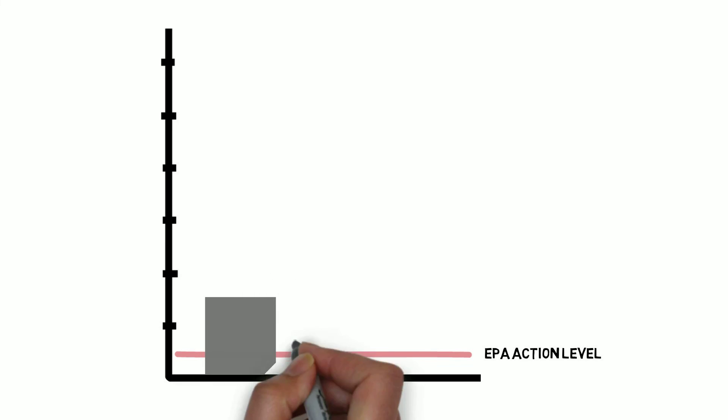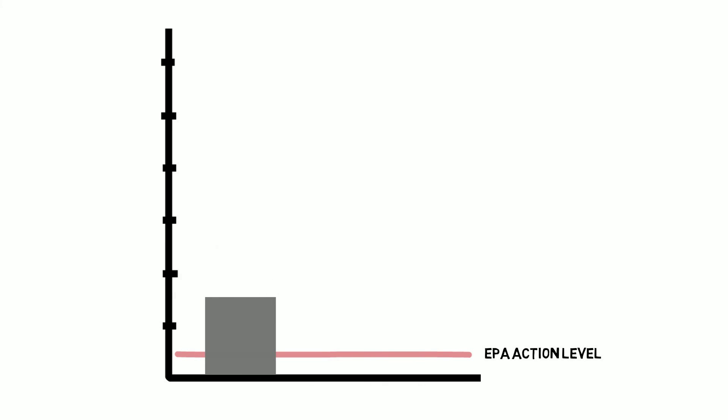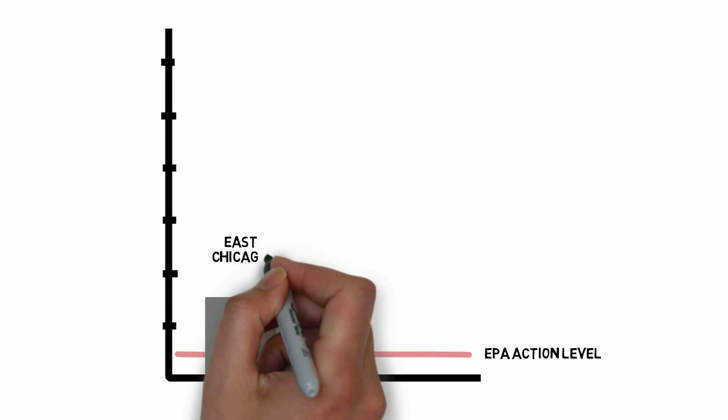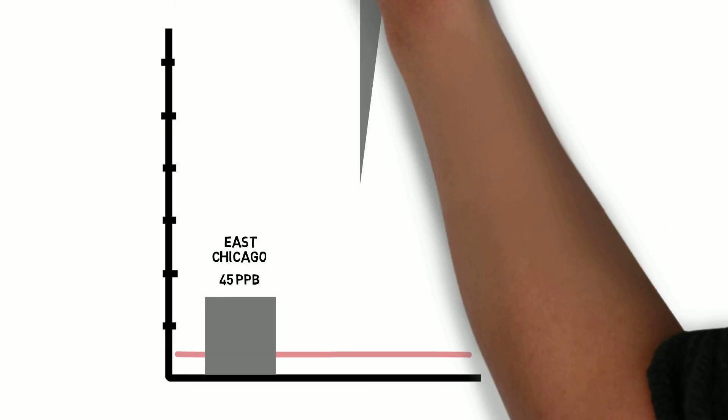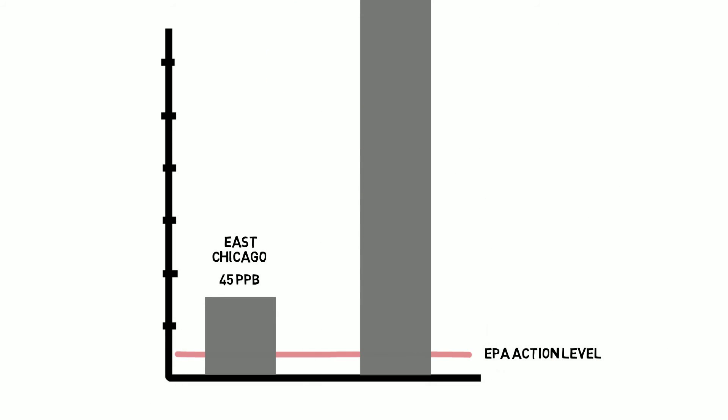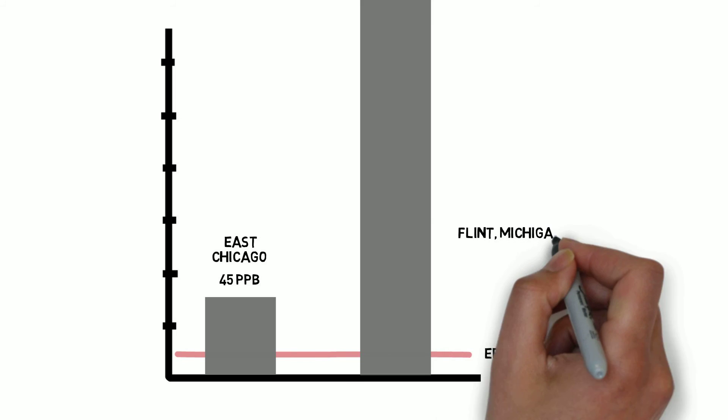To put that into context, in East Chicago, the highest measured level of lead in the water supply was 45 parts per billion. In Flint, Michigan, that level was 11,000 ppb.